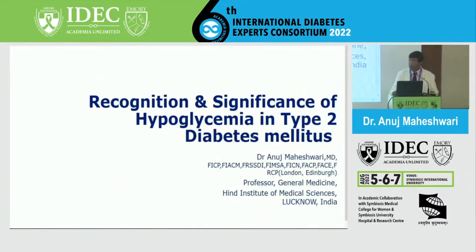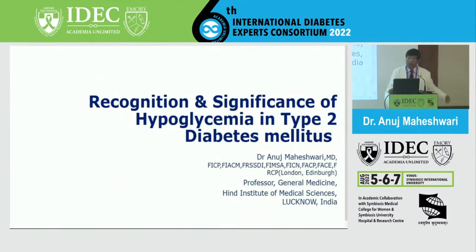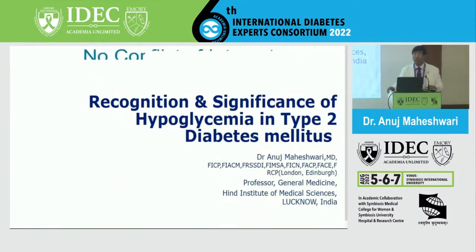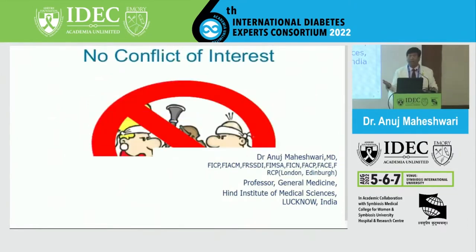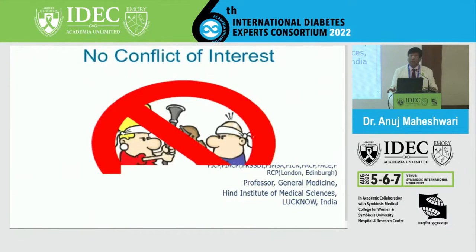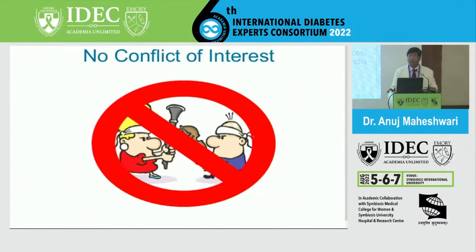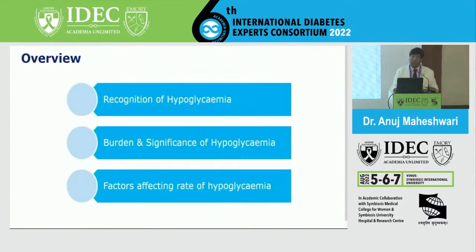Let's discuss the recognition and significance of hypoglycemia in type 2 diabetes mellitus. Although recognition and significance of hypoglycemia is well established in type 1 diabetes - we tell type 1 patients that without a glucometer they cannot survive - the question is whether this is really true for type 2 diabetes patients also. I shall be covering recognition, burden and significance, and factors affecting the rate of hypoglycemia.